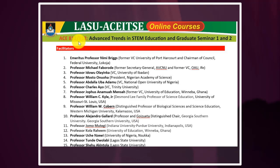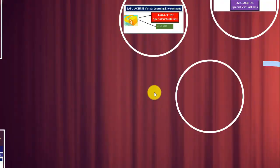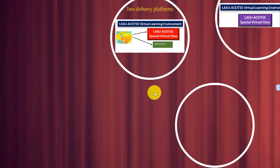For 812/912, that's Advanced Strengths in STEM Education and Graduate Seminar — you can see them all, 15 world experts welcoming you as students. And then for the third course, 813/913 — of course there are two courses bundled together, making six in total — the Cultural, Techno, Contextual Approach to STEM Education and Research. You can see our seven facilitators.